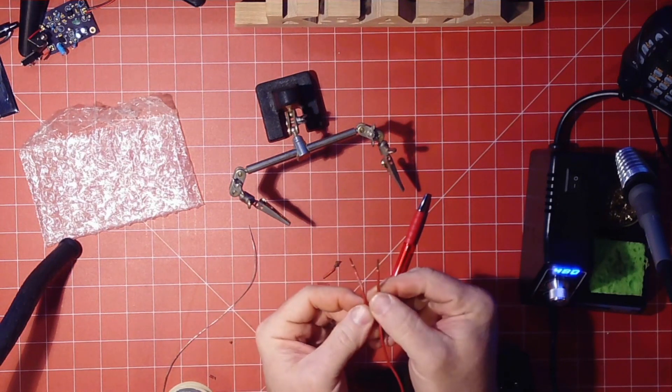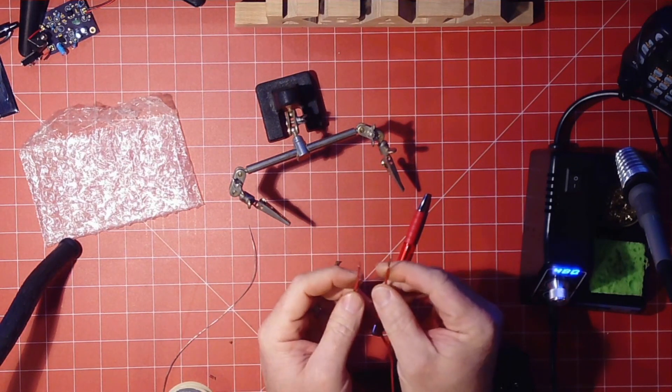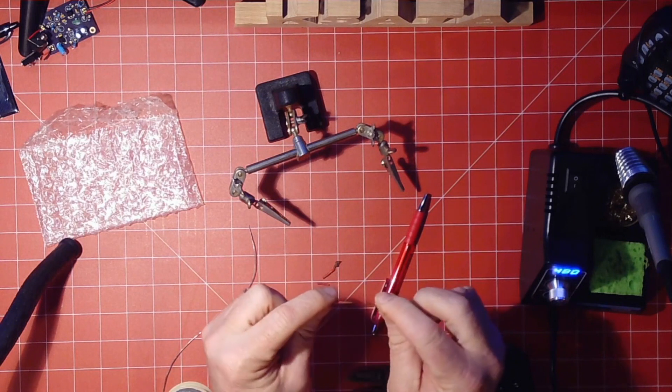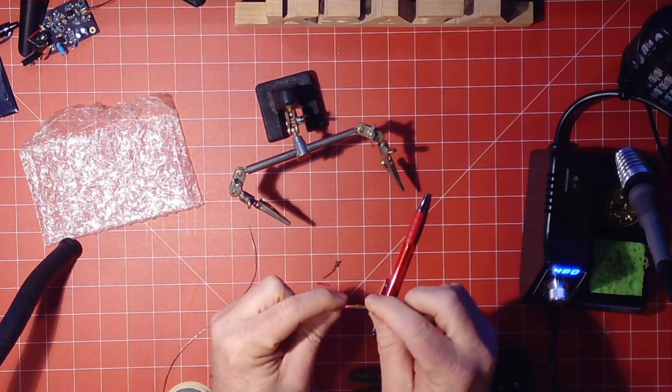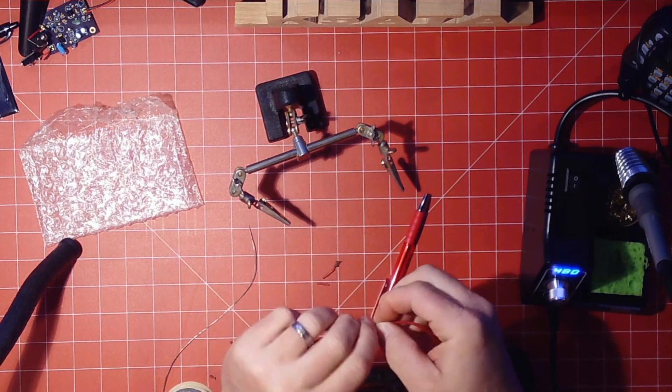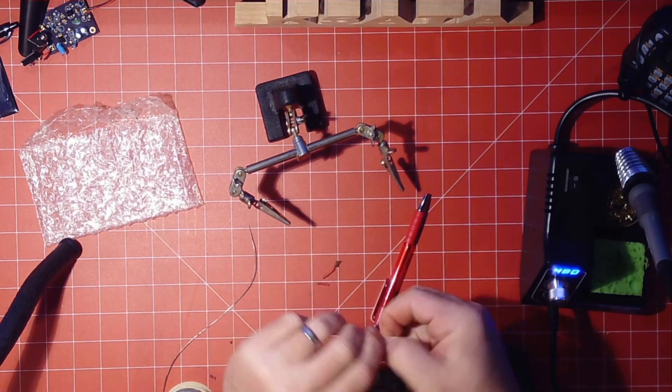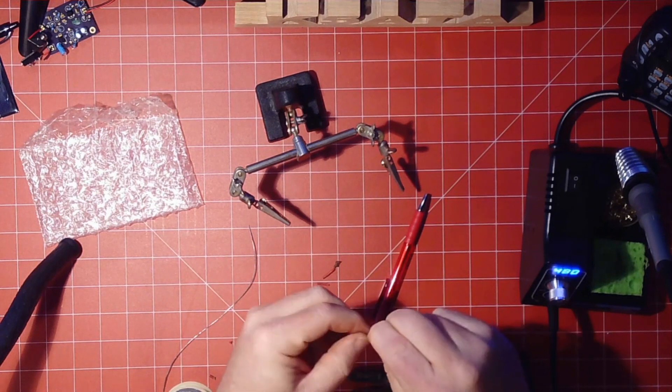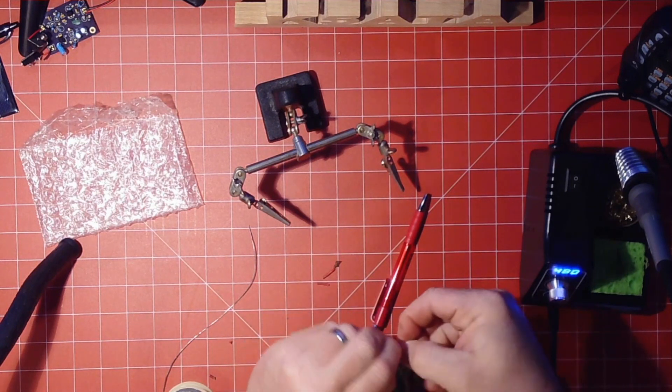So now, what we have are two ends and they're stranded wire. You can do a couple of different ways. I like to kind of push them together and twist them.